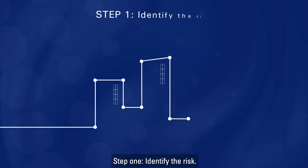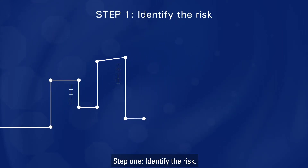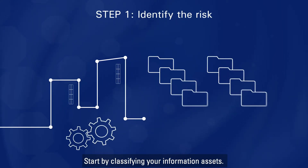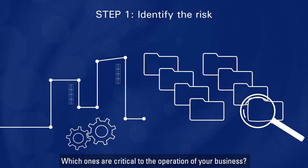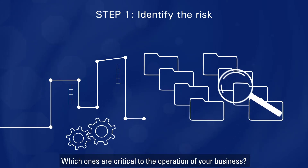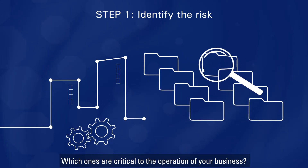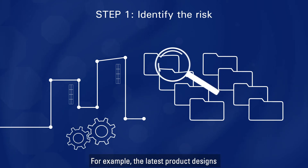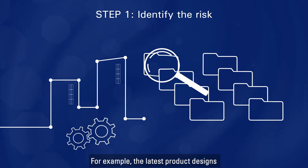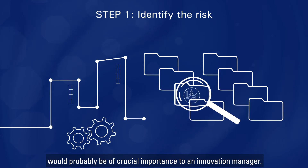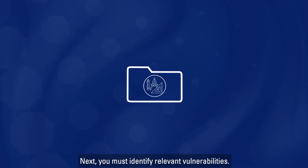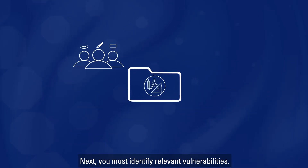Step 1: identify the risk. Start by classifying your information assets. Which ones are critical to the operation of your business? For example, the latest product designs would probably be of crucial importance to an innovation manager. Next, you must identify relevant vulnerabilities.